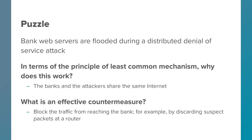Here's an example that will hopefully get you thinking about the internet. Bank web servers are all over the place. When you do banking over the web you go through one. Attackers have been known to do what's called a distributed denial of service attack, where they simply flood the bank servers — the hope is to prevent legitimate users from accessing the server. In terms of the principle of least common mechanism, think about why this works and what an effective countermeasure might be.